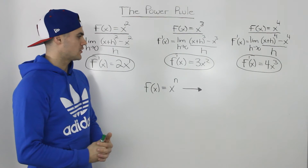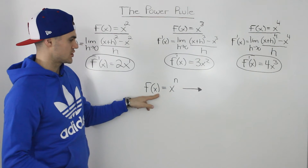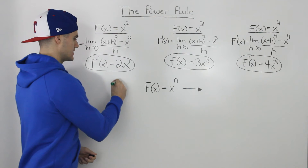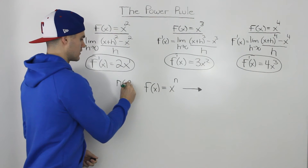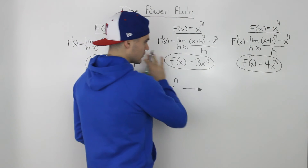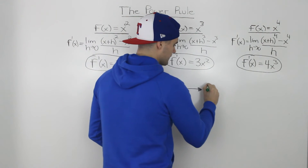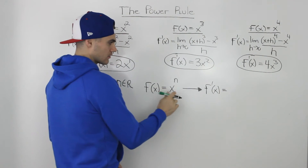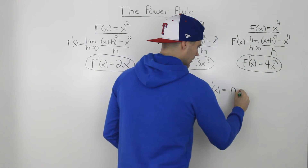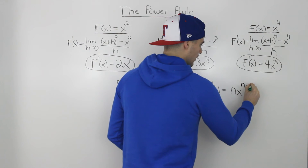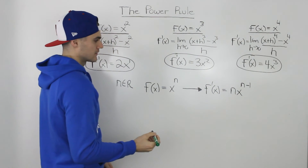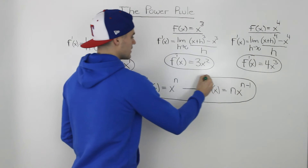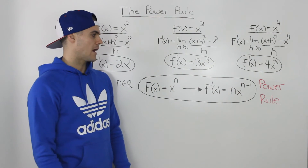So if we try to generalize it: if we have a function x to the power of n, where n is any real number, then its derivative — following this same pattern — we bring the n down in front and then subtract 1 from that exponent, giving us n · xⁿ⁻¹. This is the power rule.